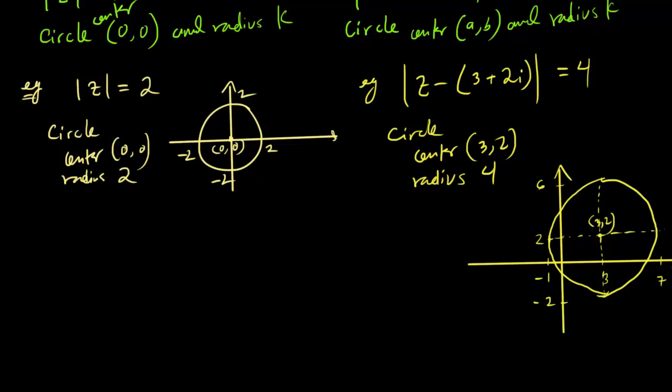If you have a circle with center (a,b) and radius r, then the equation of the circle is going to be (x-a)² plus (y-b)² equals to radius squared.